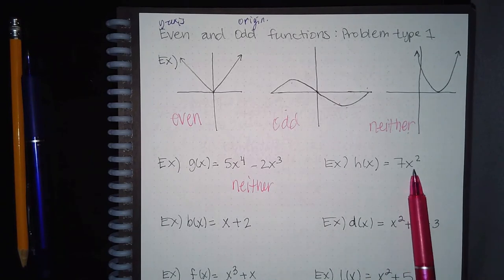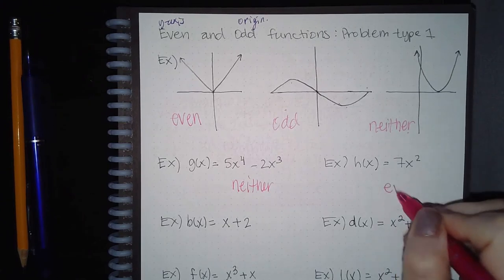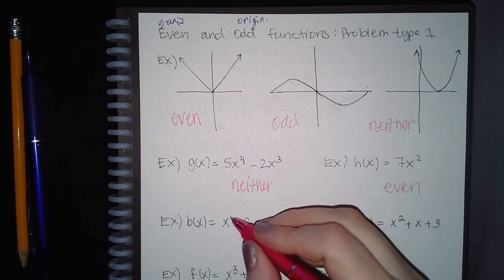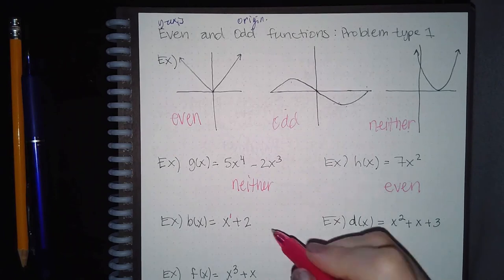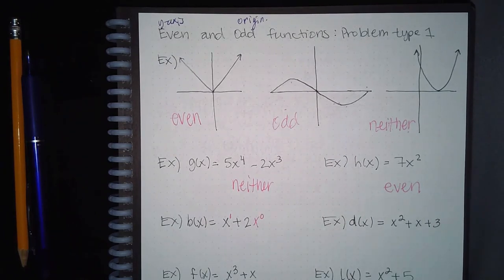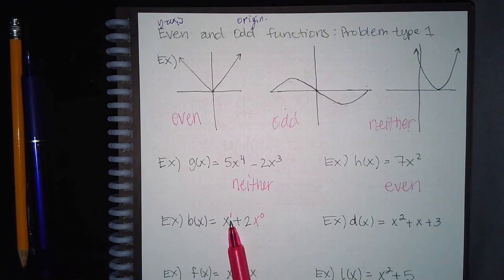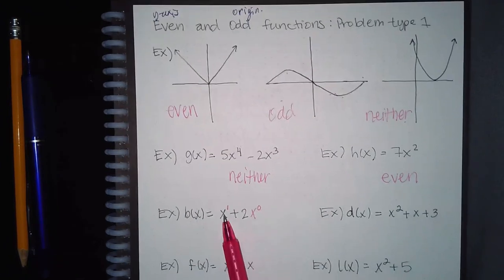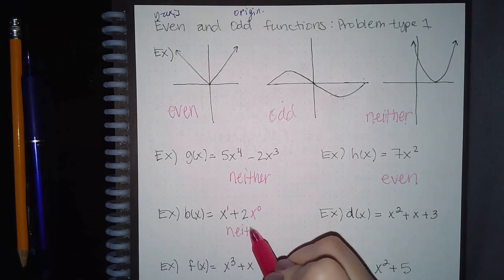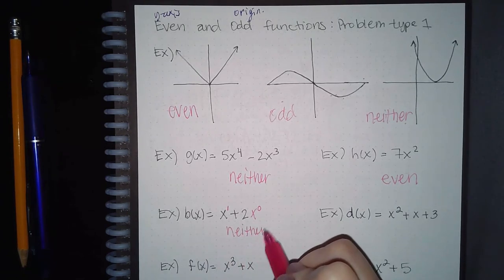For x squared as the only term, the exponent 2 is even, so this is an even function. Here you have x, which has an exponent of 1, and you have a constant, which is actually x to the power of 0. Zero is even and 1 is odd, so this is actually neither even nor odd.